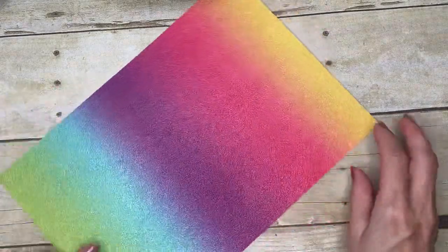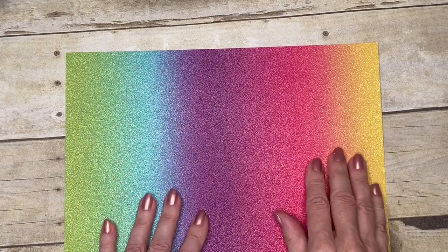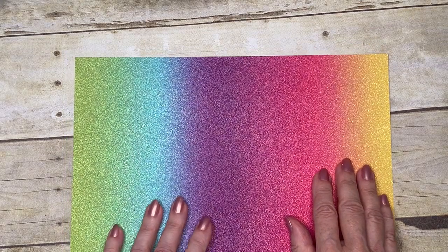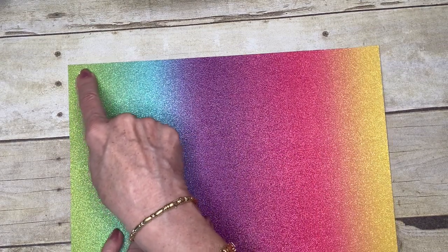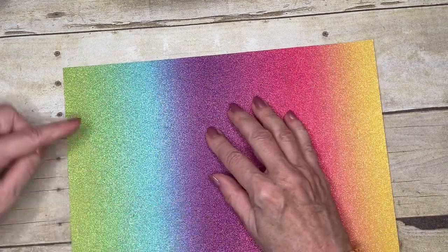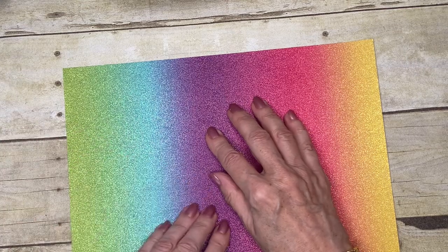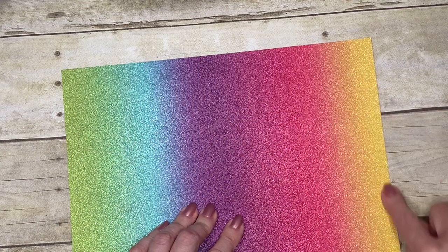So here's the glimmer paper and you can see it's kind of a rainbow set of colors. And you can either cut your letters out so that you get different colors by going this way, or if you want to focus on a particular color, you can cut your letters sort of this way.